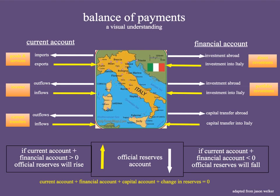So that's the current account. Now, just understand the logic — don't worry about the details. The financial account is another component of balance of payments. What I'm going to tell you right now is that if the flow of money in the current account is negative, the flow of money in the financial account is going to be positive, or vice versa. In the end, these two things are going to cancel each other out with some help from the official reserves.